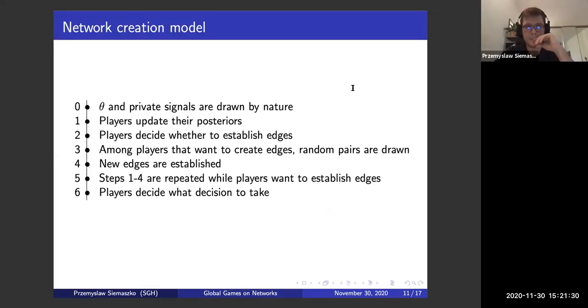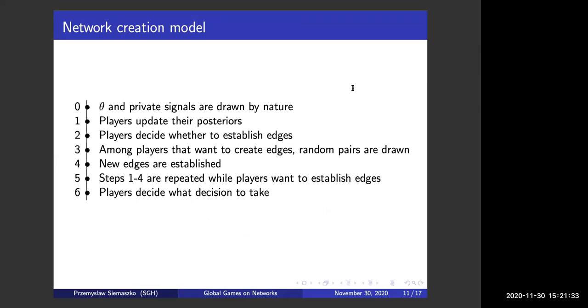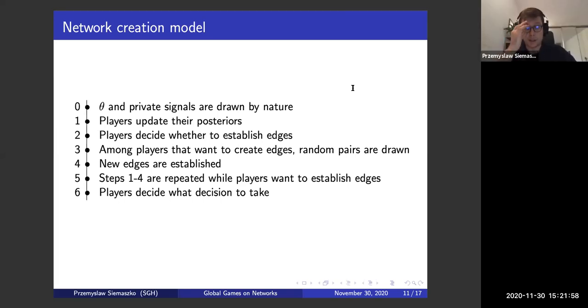And second point, can you come back to the timeline where the players form edges? Point 1 to 4. Suppose you modify a bit the model and when you receive your posterior, you can choose whether or not to enter a room. And everyone who enters this room, they share together, all together, not two by two, but all together, their information. You have some information room or some website that you can connect and you share your information with everybody on the website. Would it change something or whatever?